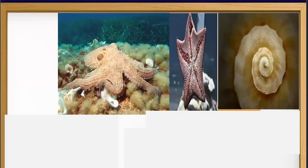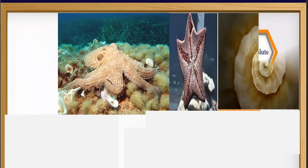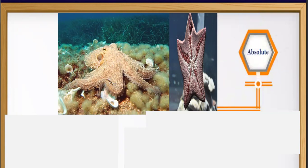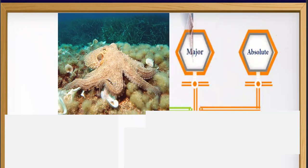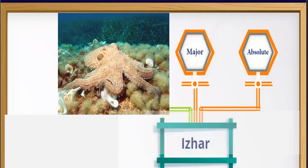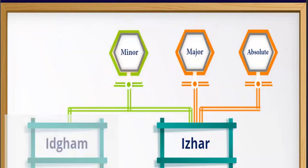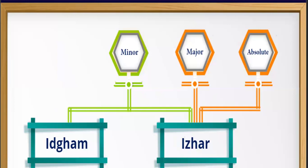Regarding the rules of متقاربين, there are two rules. Number one: absolute and major share the same rule — is-hard (إظهار). Number two: major and minor also share a rule — it is إدغام. That means not all three types of متقاربين have the same rule; only two types share إدغام — major and minor.